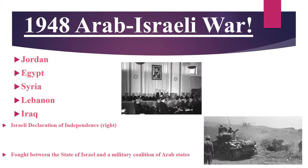600,000 Jews fought off the armies of five Arab states: Jordan, Egypt, Syria, Lebanon, and Iraq. The outcome of the war was the Israeli Declaration of Independence on May 14, 1948, in which the head of the Zionist organization declared the establishment of the State of Israel. The picture on the top right is the Israeli Declaration of Independence being declared, and the picture on the lower right is a depiction of the Arab-Israeli war itself.